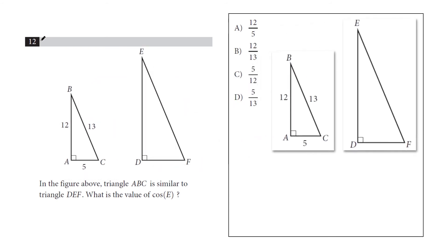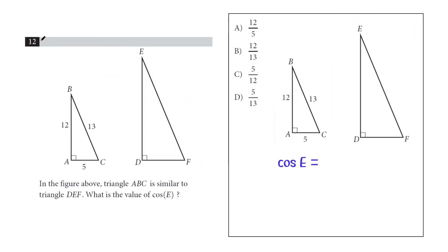All right, so we know what cosine is. Cosine E is something having to do with the adjacent over the hypotenuse. In other words, we're dealing with this angle, and adjacent would be this side. And the hypotenuse would be this side.